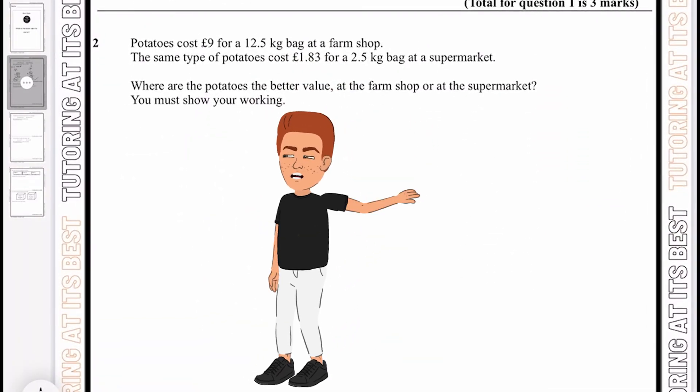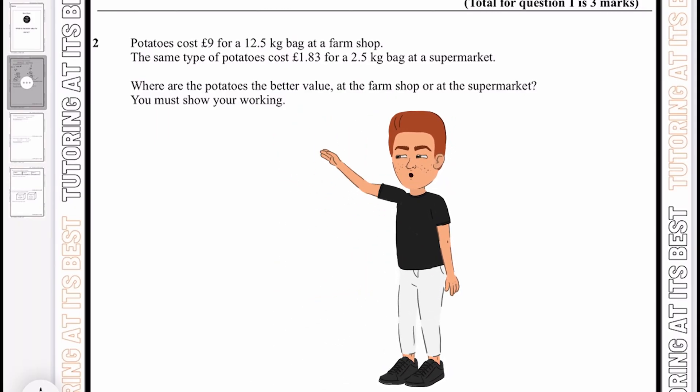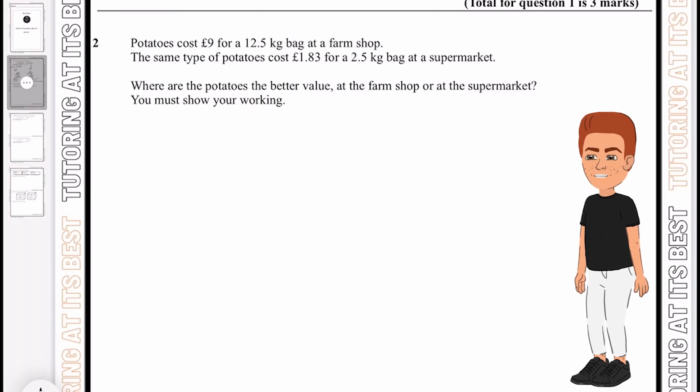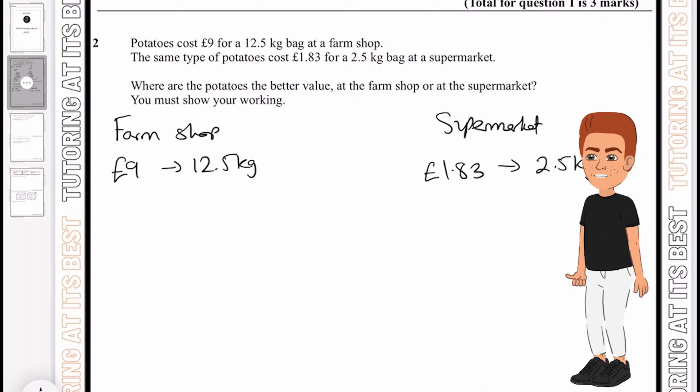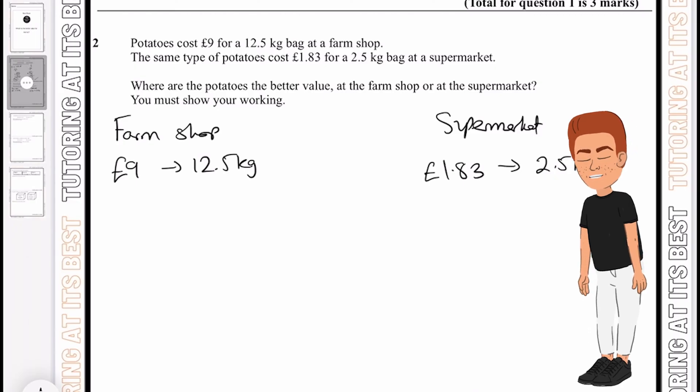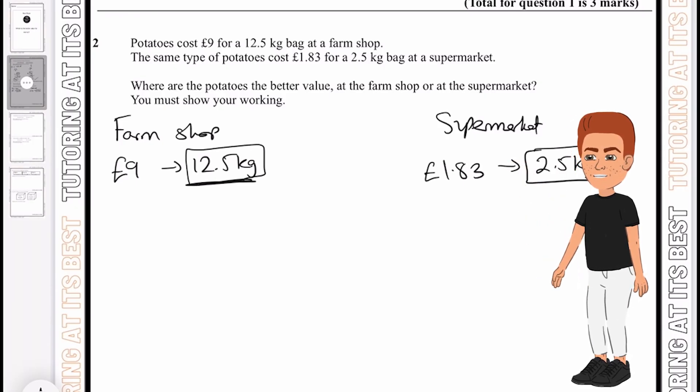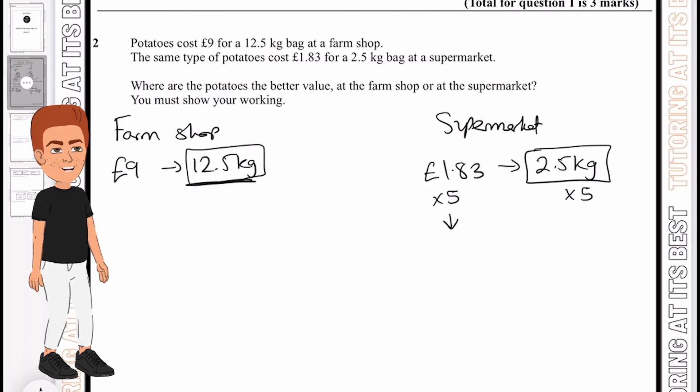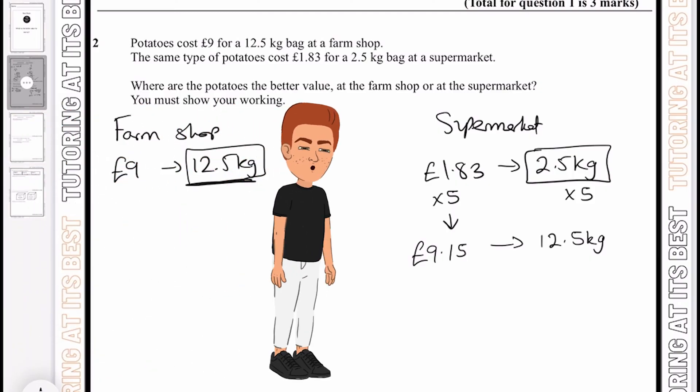Let's now jump into question 2. Potatoes cost £9 for a 12.5 kg bag at a farm shop. The same type of potatoes cost £1.83 for a 2.5 kg bag at a supermarket. So where are the potatoes the better value? I need to make both the weights the same. I know 2.5 times 5 gives me 12.5, so if I'm timesing the kg by 5, I need to also times my amount by 5. £1.83 times 5 gives me £9.15 for a 12.5 kg bag. That means the farm shop is better value by 15 pence.